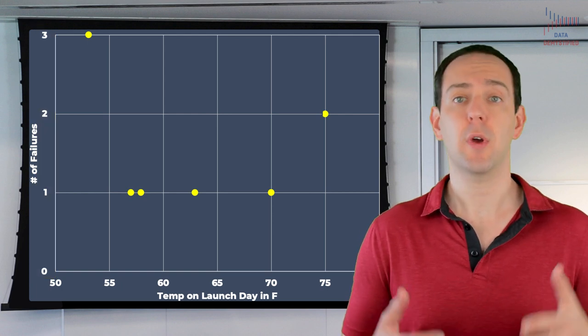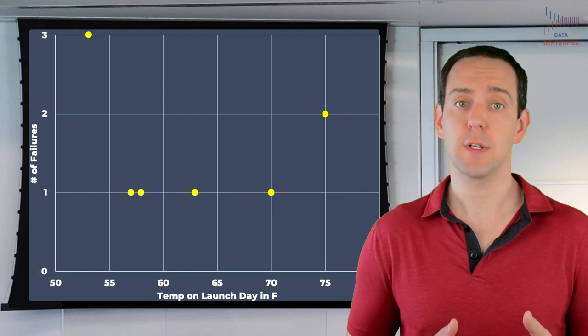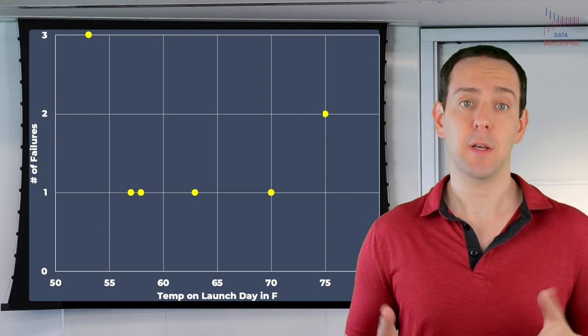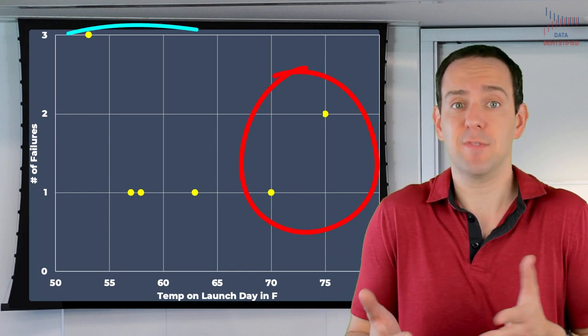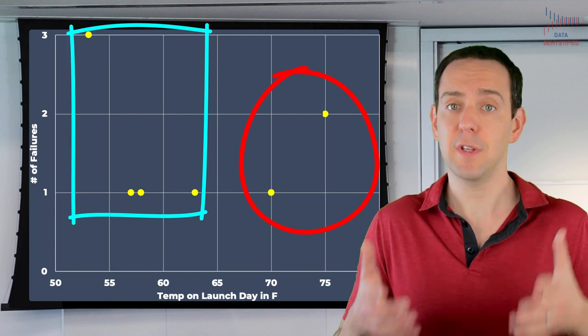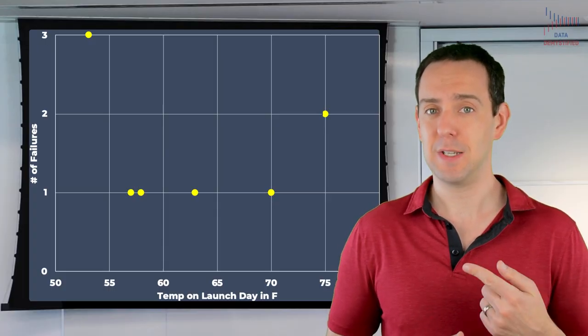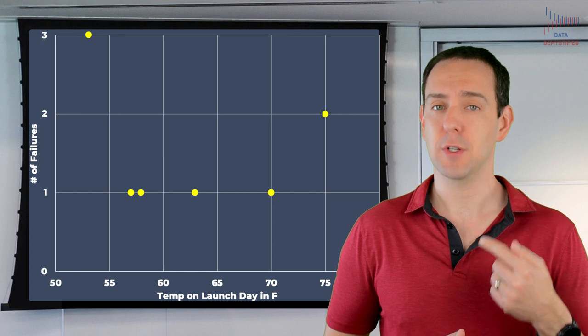What the engineers did was try and compare the temperature on previous launch days to the likelihood of O-ring failures. And what they did was say something like, look, sometimes it's hot and sometimes it's cold. O-rings fail roughly equally at all temperatures. In other words, just because the Challenger will launch on a cold day doesn't increase the risk of O-ring failure any more than if it launched on a warm day. But can you spot the problem? Can you see what the engineers did so tragically wrong?